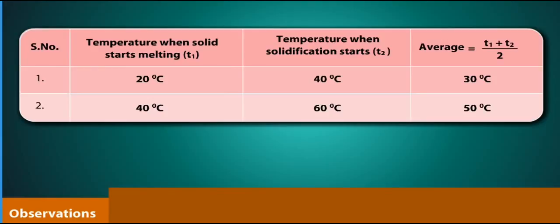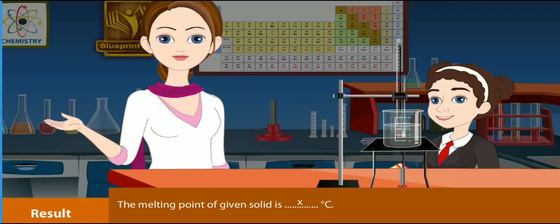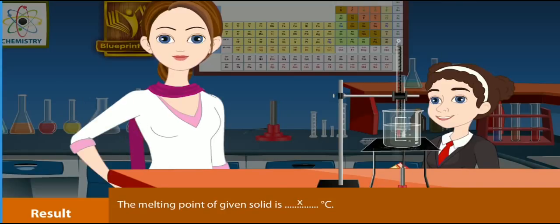Observations: Serial number, temperature when solid starts melting T1, temperature when solidification starts T2, average is equal to T1 plus T2 upon 2. Result: The melting point of given solid is X degrees Celsius.